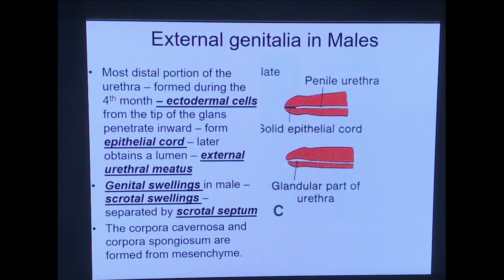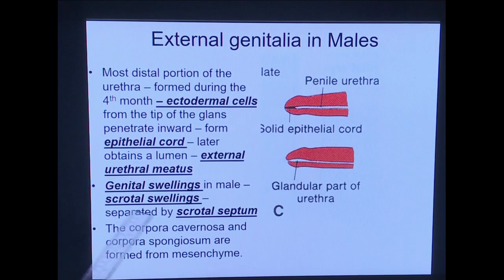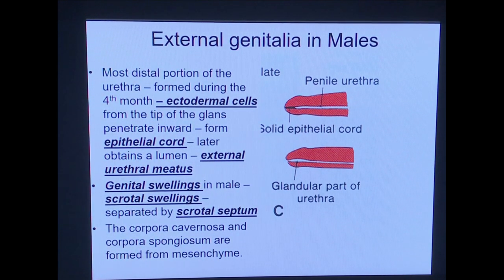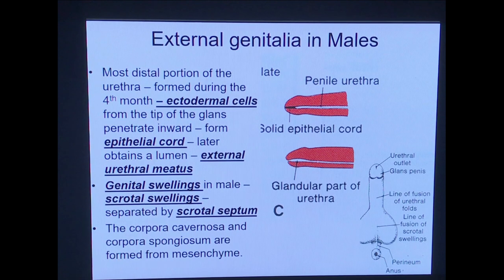The genital swellings on either side of the urethral folds, under the influence of androgen (testosterone), further develop into the scrotum — forming the scrotal swellings. The two halves of the scrotum fuse externally but are separated internally by the scrotal septum. The corpora cavernosa and corpora spongiosum of the penis are mainly contributed from mesenchyme, while the penile urethra is mainly contributed by endoderm, except the part within the glans penis which is ectodermal.